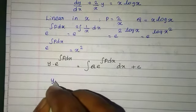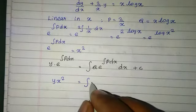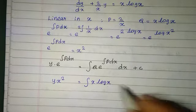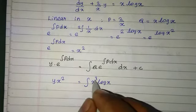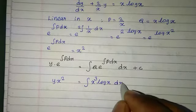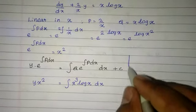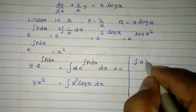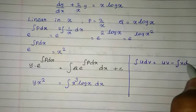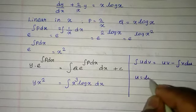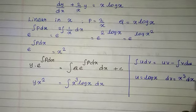Using the solution formula: y into x squared equal to integral of Q into e power integral P dx into dx plus c. The value of Q is x log x and e power integral P dx is x squared, so we get integral of x log x into x squared into dx, which is integral of x cubed into log x into dx. We use the integral u dv formula. Taking u equal to log x and dv equal to x cubed into dx.